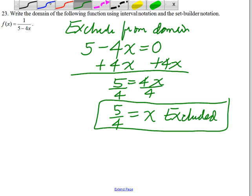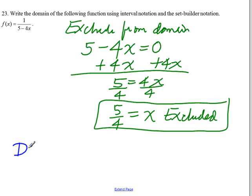How do I express the domain? I can say simply that the domain would be all the x values that are not equal to 5 over 4.